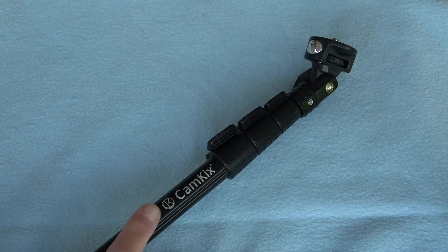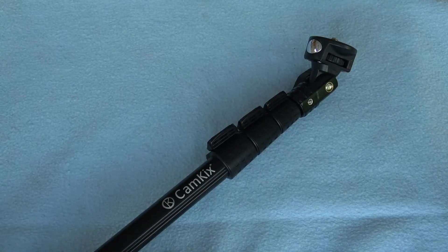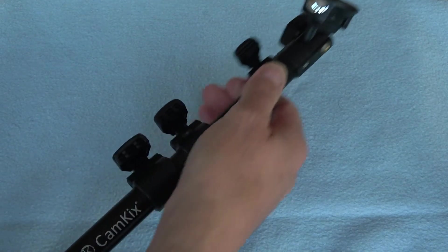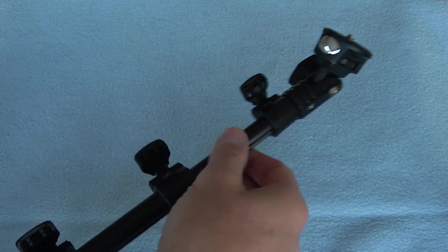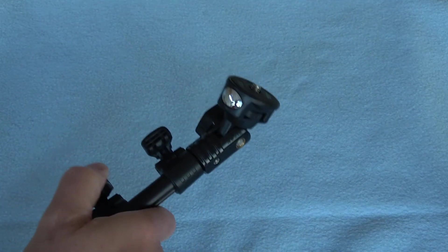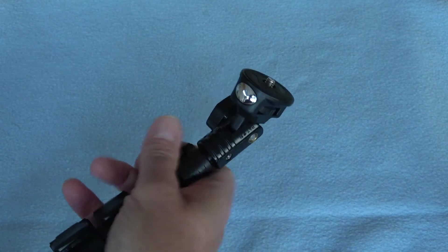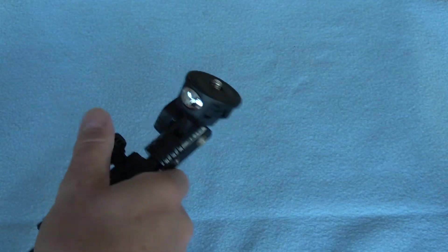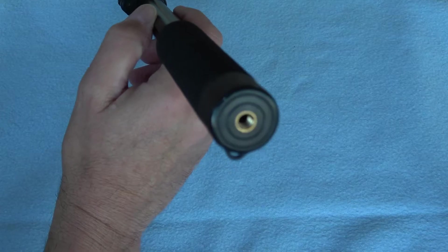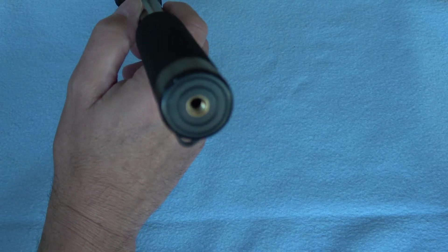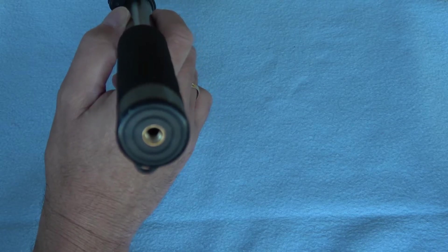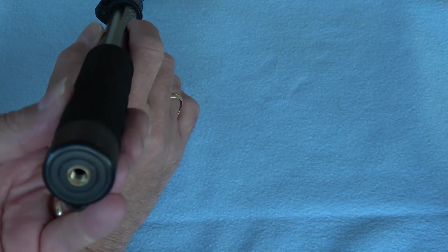What we have here is the cam kits selfie pole, selfie stick or even like a miniature monopod. These pop out to extend quite well but what it actually got on the bottom, let's just lock it down. On the bottom can you see that there, that is a quarter-twenty tripod bush. So this is my next little trick.